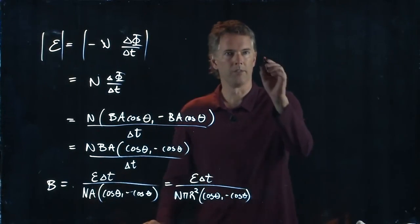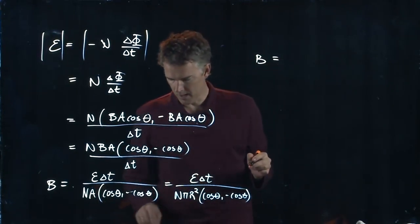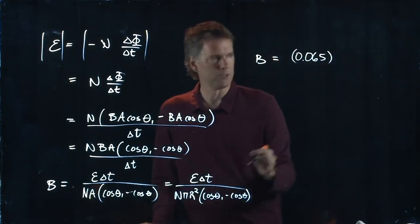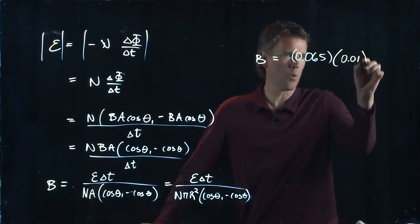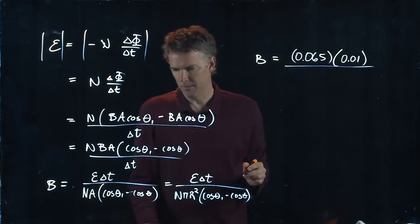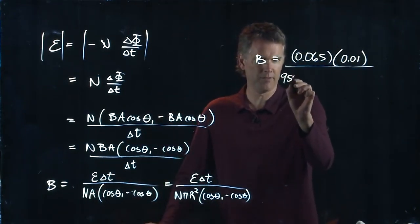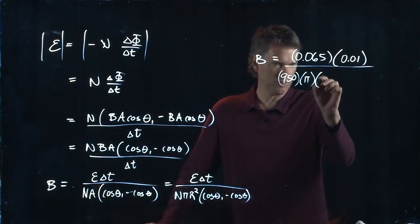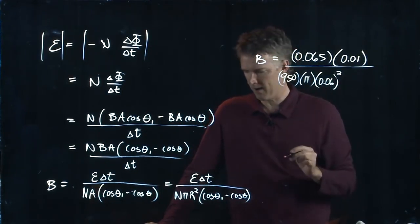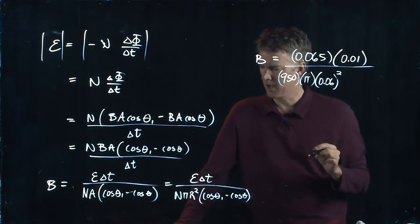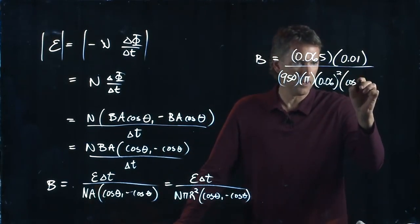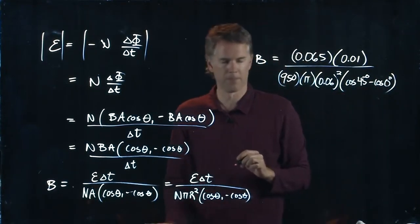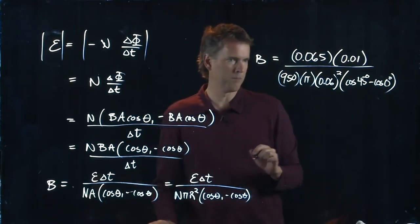All right, so we've got B equals epsilon, we said was 0.065 volts, delta t was 0.01 seconds. Down on the bottom we've got N which we said was 950, we've got pi which is pi, we've got r which is 0.06 squared, and then we have cosine of theta 1.